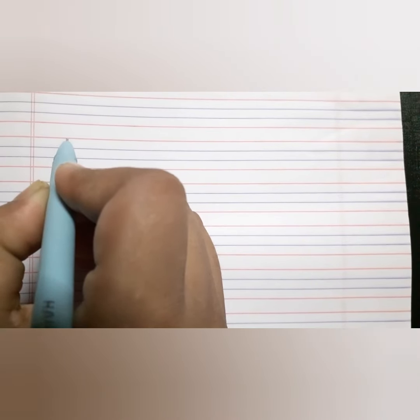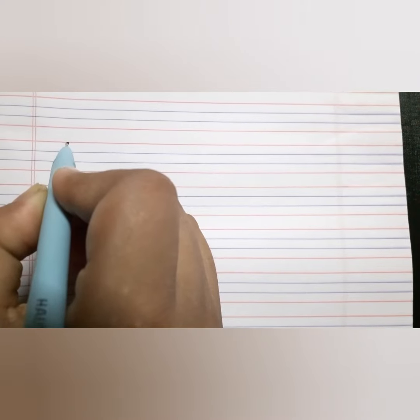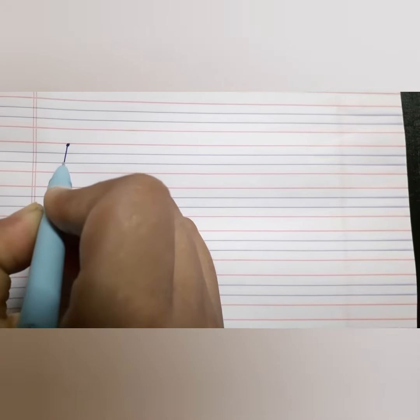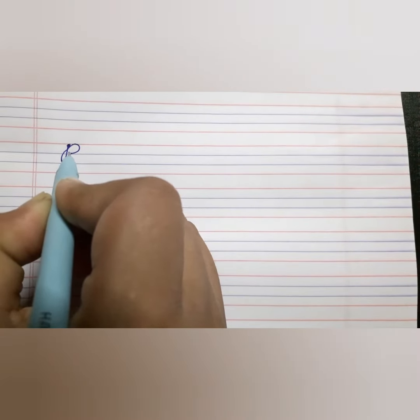For P, first you have to go to the first red line here. From here we will come down to the third line and take a left turn, go up like this and here is P.